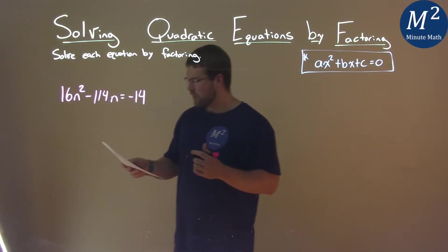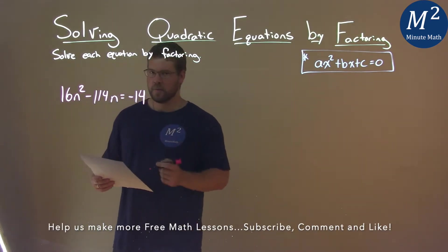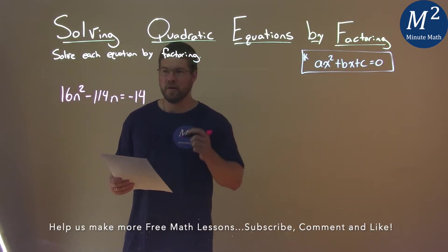We're given this problem right here. 16n squared minus 114n equals negative 14, and we need to solve this by factoring.